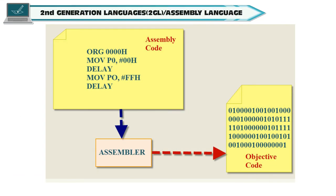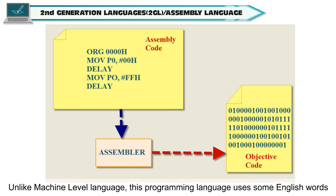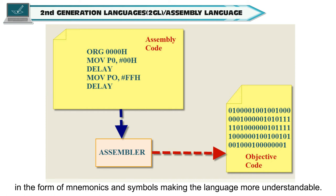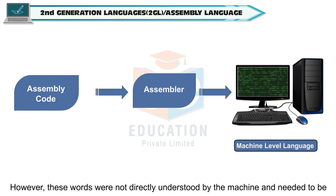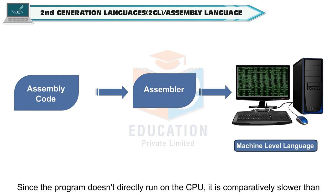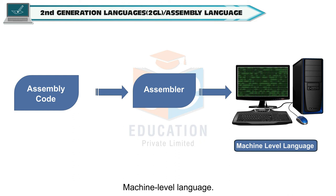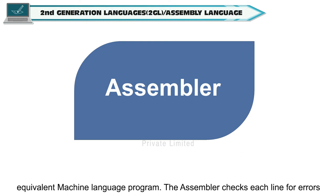Second generation languages are also referred to as assembly language. Unlike machine level language, this programming language uses some English words in the form of mnemonics and symbols, making the language more understandable. However, these words were not directly understood by the machine and needed to be converted into machine level language by the assembler before execution. Since the program doesn't directly run on the CPU, it is comparatively slower than machine level language. An assembler is a language processor which converts an assembly language program into its equivalent machine language program.